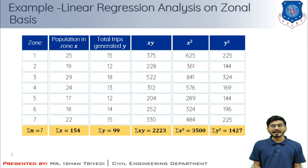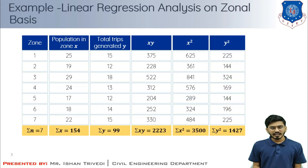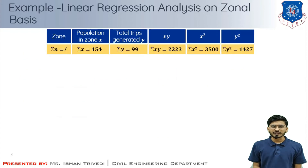The sigma values and number of samples are: n = 7, σx = 154, σy = 99, σxy = 2223, σx² = 3500, and σy² = 1427. We will take these values as reference to compute the regression equation and the correlation coefficient.